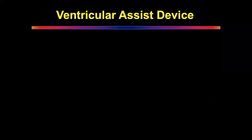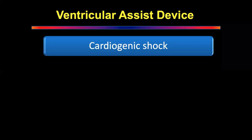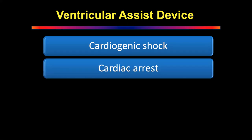Moving briefly to ventricular assist devices: VADs are indicated in cardiogenic shock, cardiac arrest, fulminant myocarditis, and failure to wean from bypass. They can also be used as standby for high-risk PTCA or high-risk cardiac surgery with poor preoperative function. Contraindications are similar to IABP: aortic regurgitation, aortic aneurysm or dissection, left heart thrombus, uncontrolled bleeding, or uncontrolled sepsis.